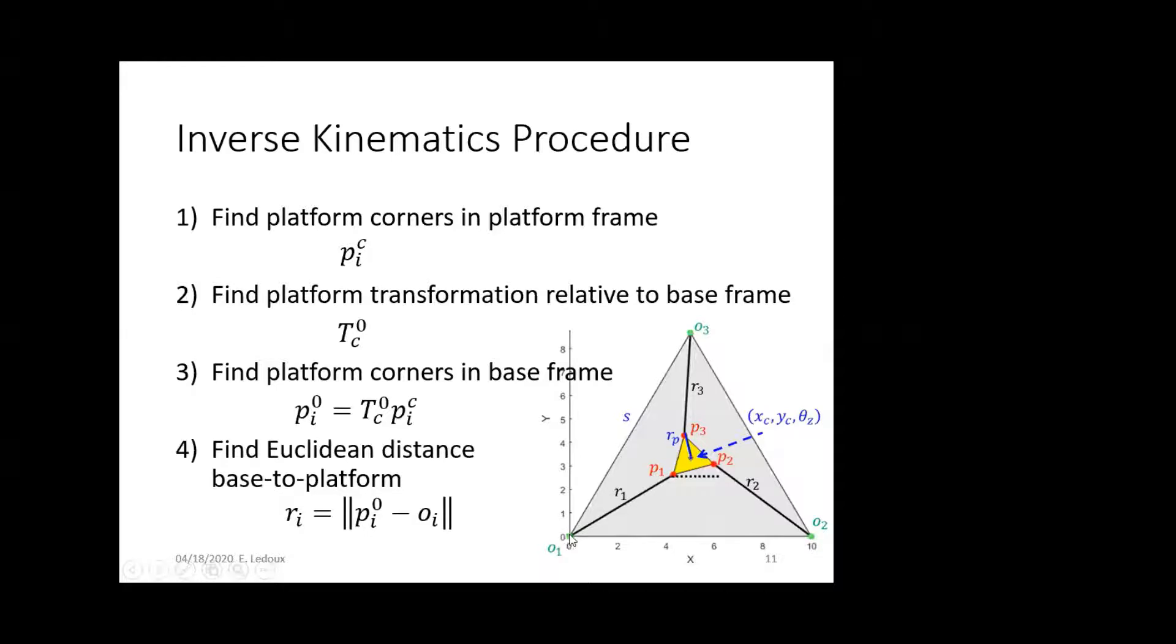So once we've found that point, and we know where its origin is, then it's just the Euclidean distance. So, square root of X squared plus Y squared to get the length of that leg.